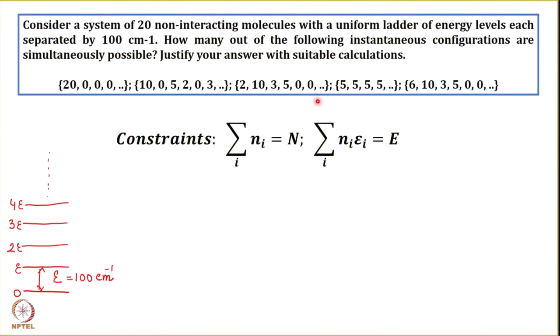Other instantaneous configurations given include (2, 10, 3, 5, 0, 0, ...), (5, 5, 5, 5, 5, ...), and (6, 10, 3, 5, 0, 0, 0, 0, ...). The question asks how many of these are simultaneously possible. We discussed that not all configurations are permissible because certain constraints must be followed. The first constraint is that the total number of molecules must remain constant: summation of n_i equals N. The sum must equal 20.